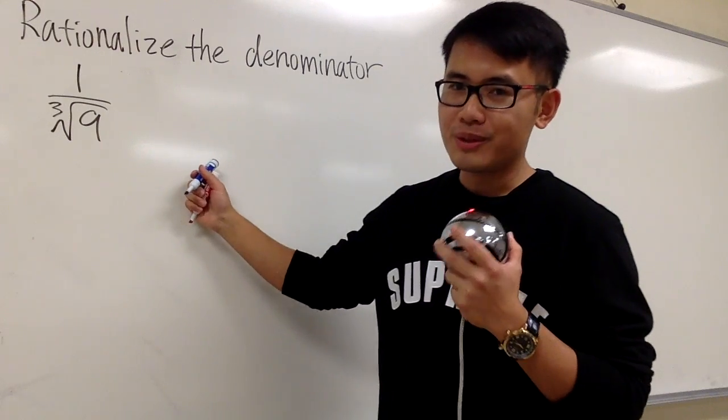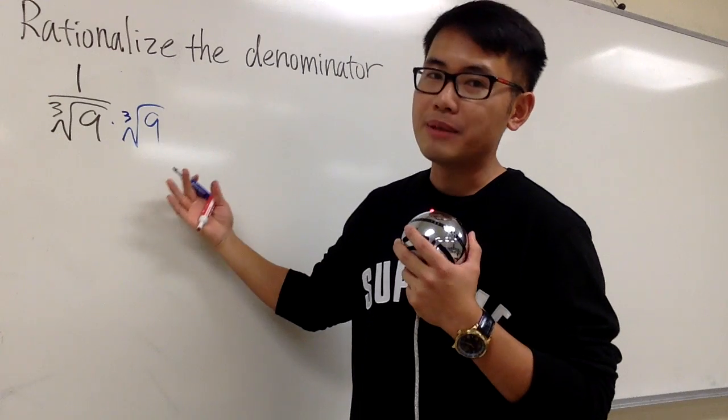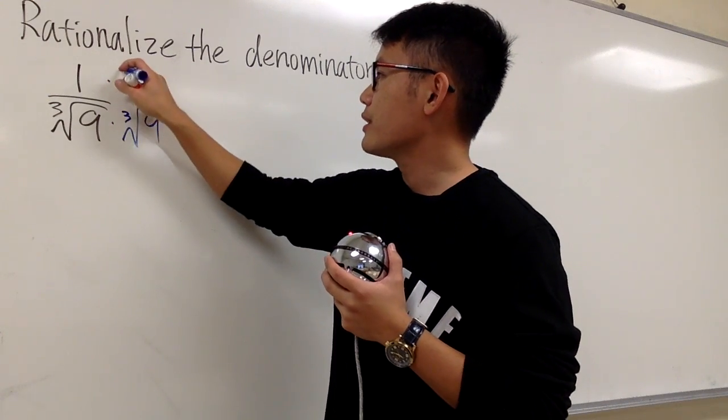Let me show you guys what's wrong first. Unlike the square root, if you just want to multiply this by the cube root of 9, which is the same thing, bottom and also do it on the top...